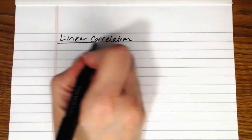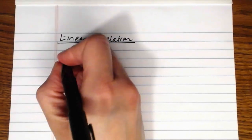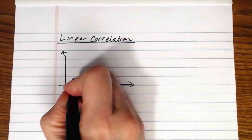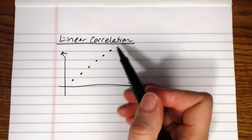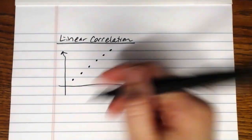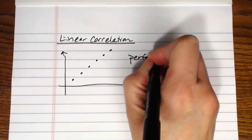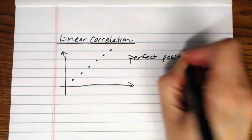In this textbook we're going to be primarily focused on linear relationships. If we had a set of data that we graphed — this is looking at linear correlation — and all of the data points fall perfectly on the same straight line, and if that straight line were to have a positive slope, this particular set of data would be said to have perfect positive linear correlation.